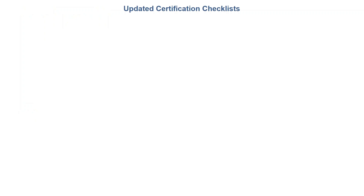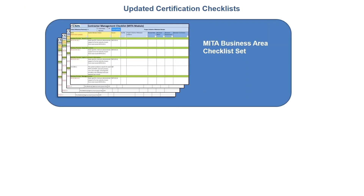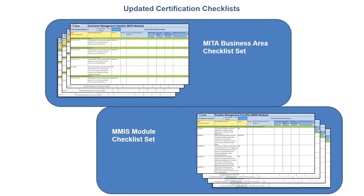The certification checklists have been updated to align with MIDA and current standards and conditions, and to capture requirements from recent laws and regulations. There are two standard checklist sets that a state may choose from. If a state has aligned its development around the MIDA business areas, then it would select the MIDA business aligned checklist set. If a state has designed modules around more traditional MMIS functions, it would select the MMIS module checklist set. For truly unique or innovative approaches, a state may contact its regional office about creating a customized set of checklists. All checklist sets contain the same criteria — they are simply organized differently.